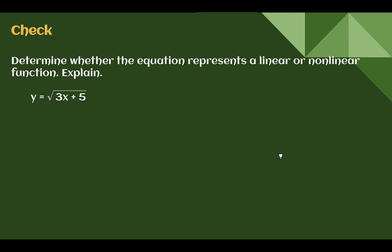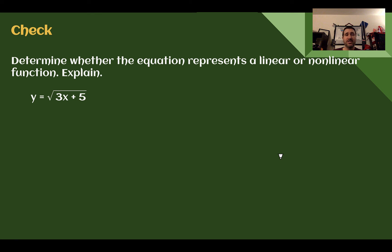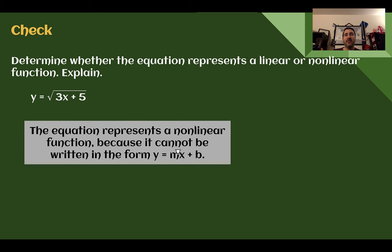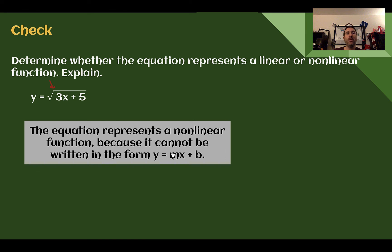Check your understanding: this equation is non-linear — we cannot write it as y = mx + b. The equation contains a square root, which was one of our rules for making a function non-linear. If we tried to eliminate the square root by squaring both sides, we'd get y², which introduces an exponent — also not okay. So no matter what, we can't get it into y = mx + b form. This is non-linear.